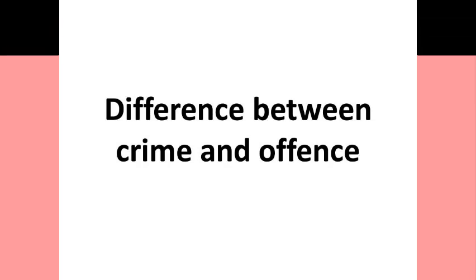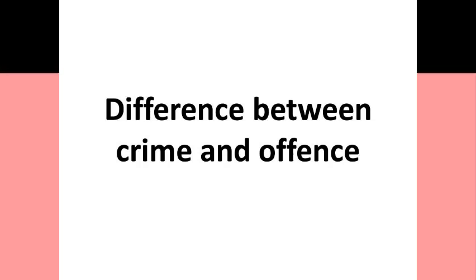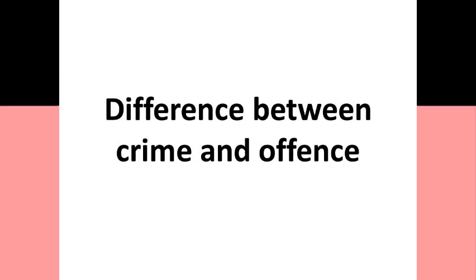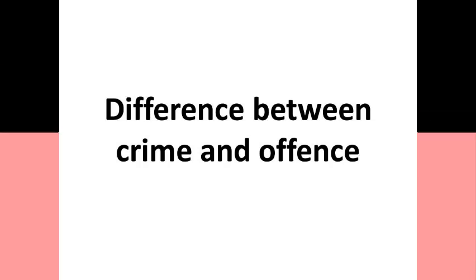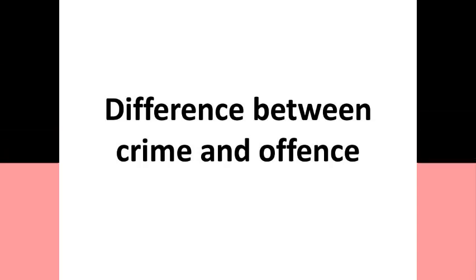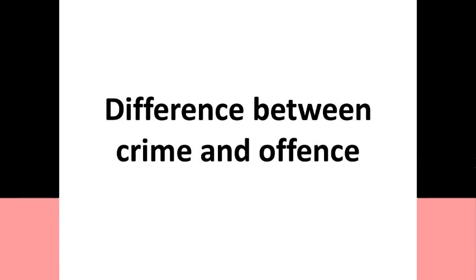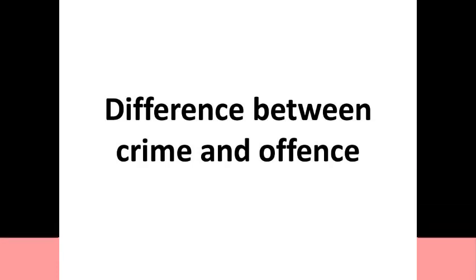Hence, crime can be said to be the bigger circle — that is, the genus — and offense will be a species. Therefore, all crimes are not offenses, but all offenses are crimes.